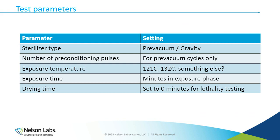When specifying the cycle in our test procedures and validation protocol, we need to specify whether we're validating a pre-vacuum or gravity cycle. If it's a pre-vacuum cycle, do we need to specify the number of pre-conditioning pulses? What is the exposure temperature, exposure time, and drying time? For lethality testing, we set drying time at zero minutes to represent worst-case conditions.